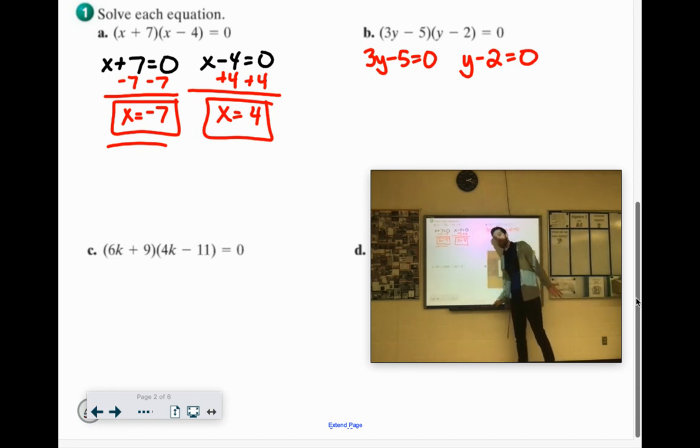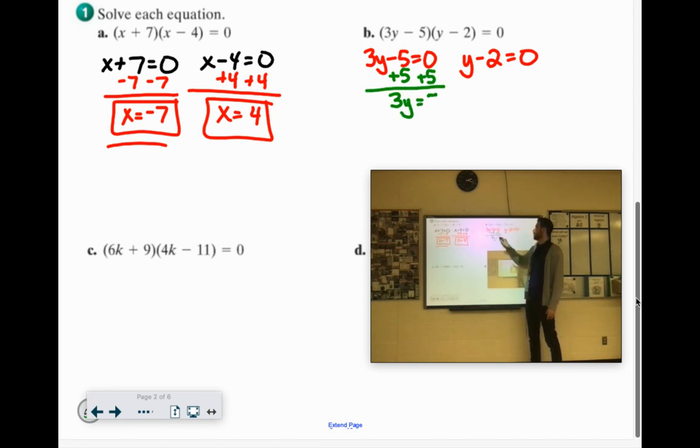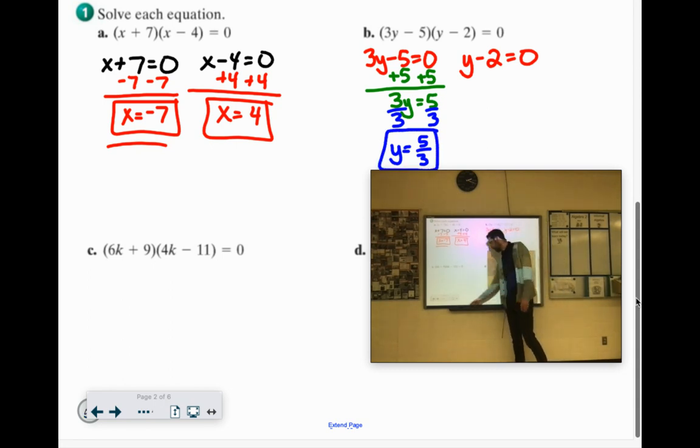How do you solve 3y minus 5? Well, you would add the 5 first. 3y equals 5. And then you don't want that 3 there. So we'll divide by 3. And just leave it 5 thirds. You can't simplify that fraction anymore. So you don't need to turn it into a decimal. You don't need to turn it into a mixed number. You certainly could.